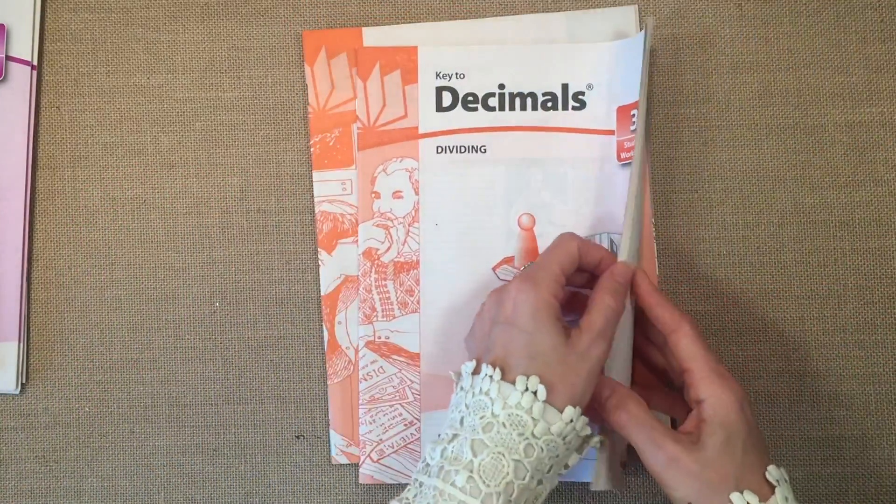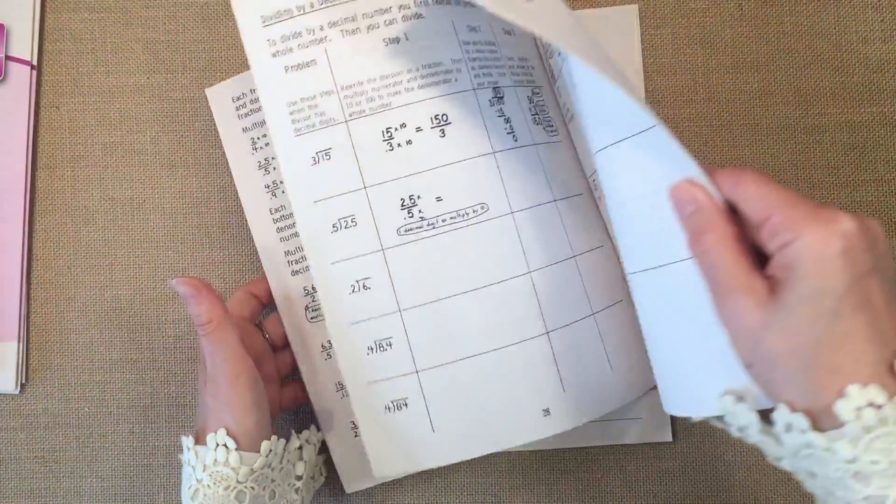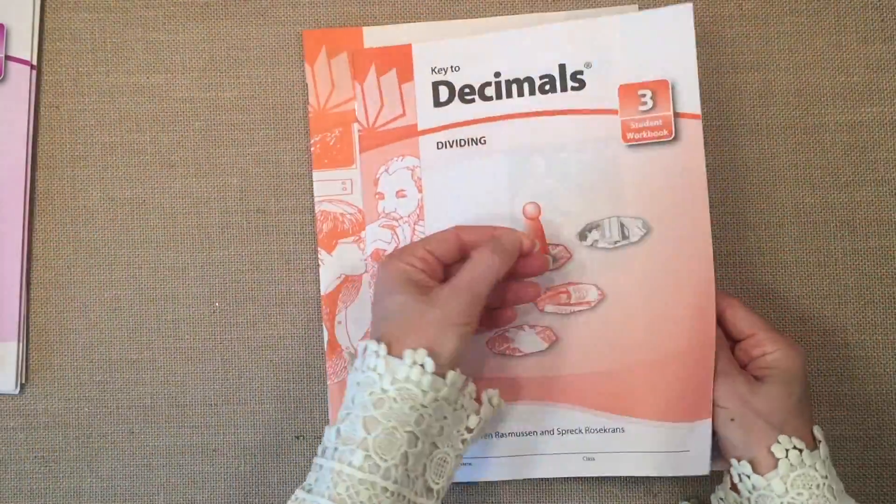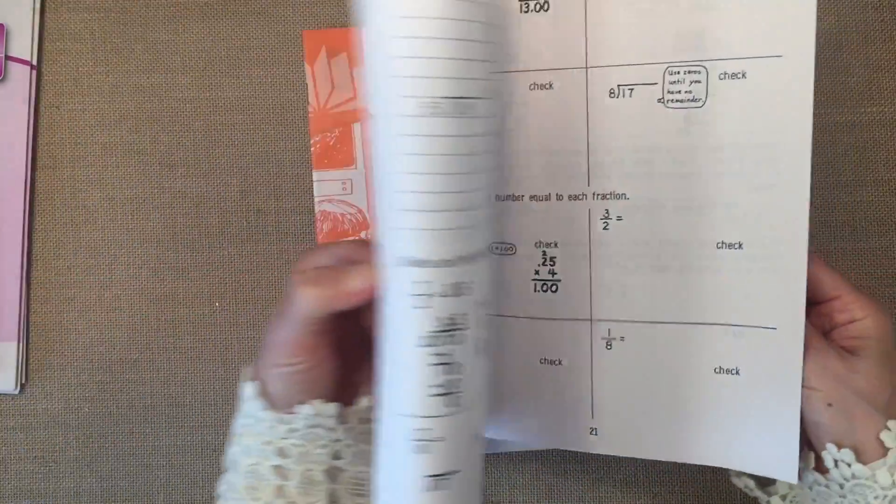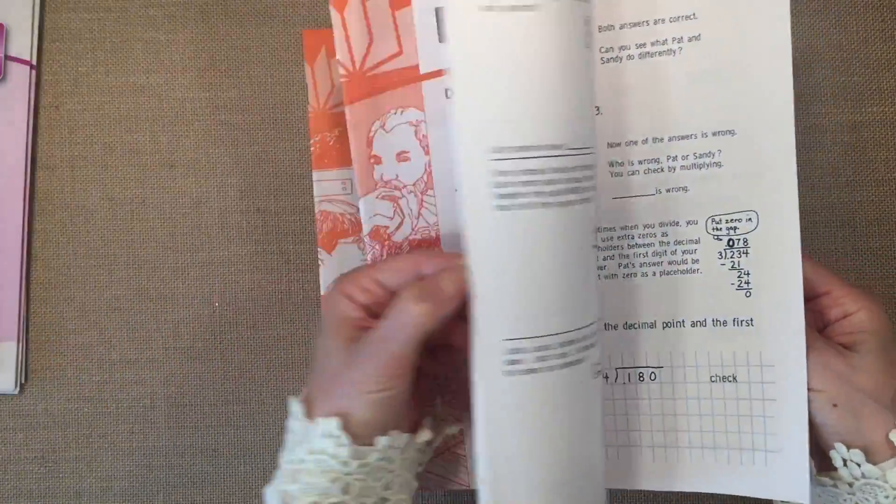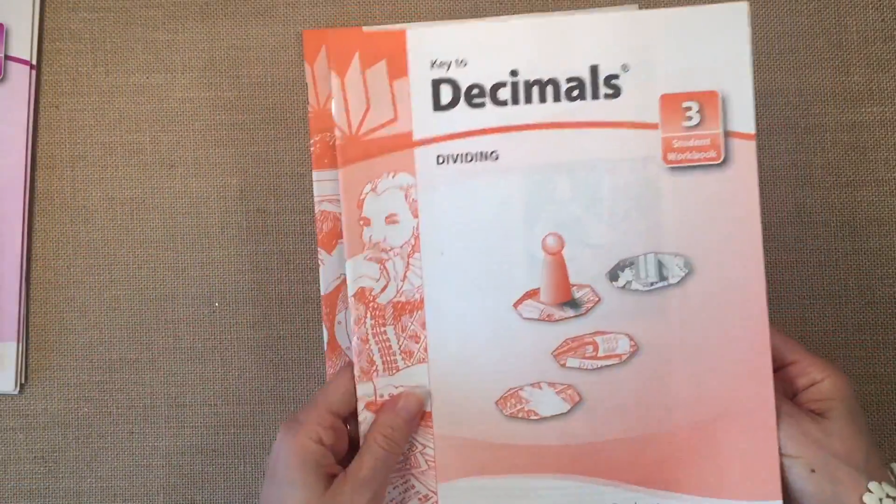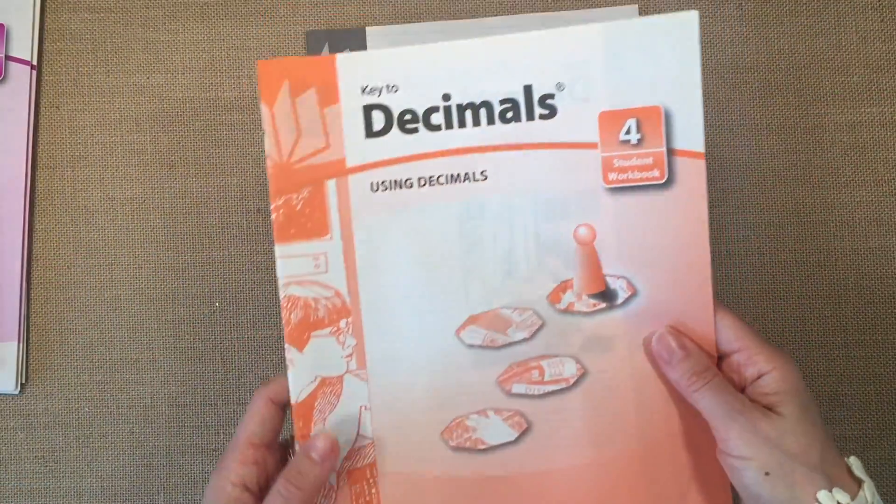Then it goes into dividing decimals. And again, there's a bit more space, but not too much. And again, not too many questions. I found that this was an appropriate amount of questions for my kids to understand the concept. And I didn't need to supplement this curriculum with anything else.